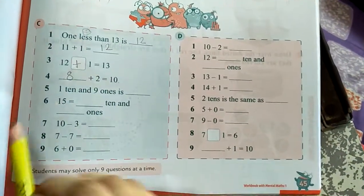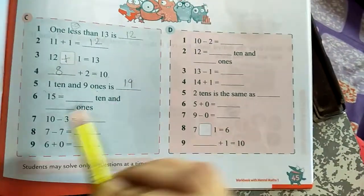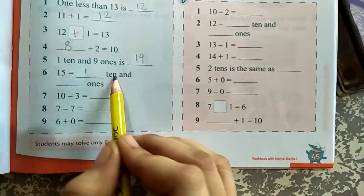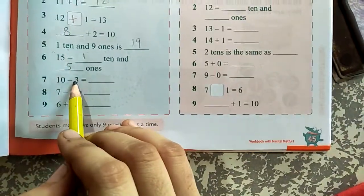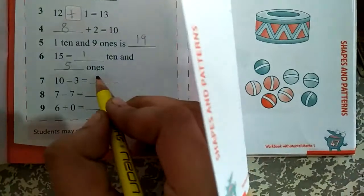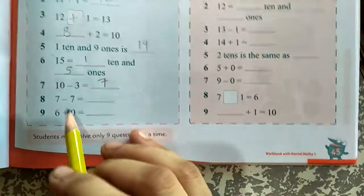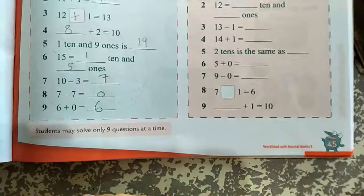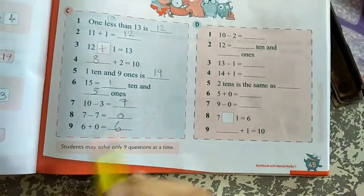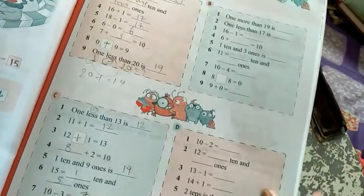1 ten and 9 ones, so it is 19. 1 ten and 5 ones: 15. 10 minus 3, so it is simple minus. 10 minus 3, your answer is 7. 7 minus 7: 0. 6 plus 0: 6.